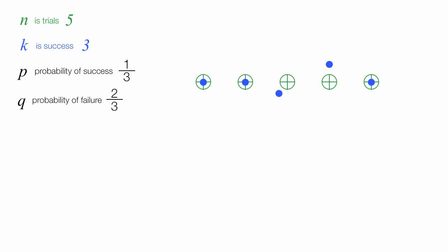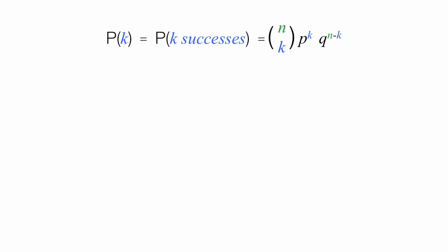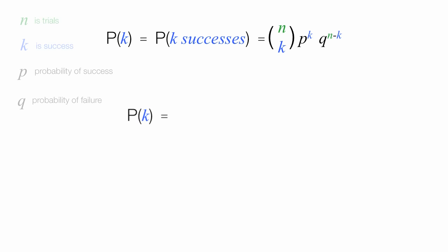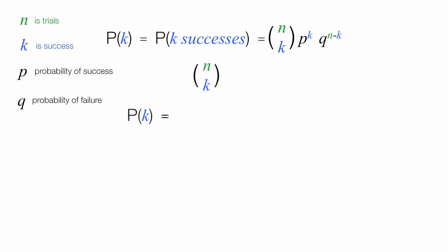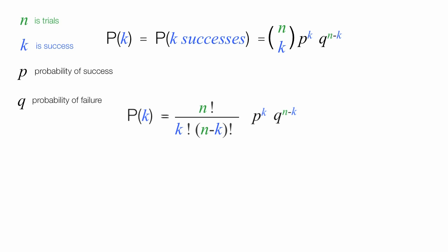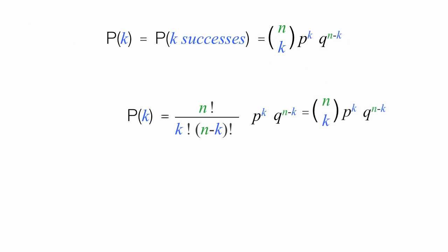For all of these types of problems, the formula you will use looks like this — the probability of success equals... The notation is a bit confusing, and that n-choose-k part is really something. I'm not going to read you that equation, but in a minute I'm going to put numbers in there, and hopefully that will make sense. I'm going to use a slightly different equivalent form that I think is a little easier to follow.